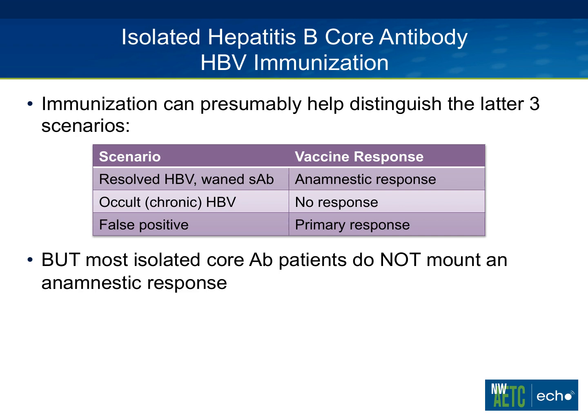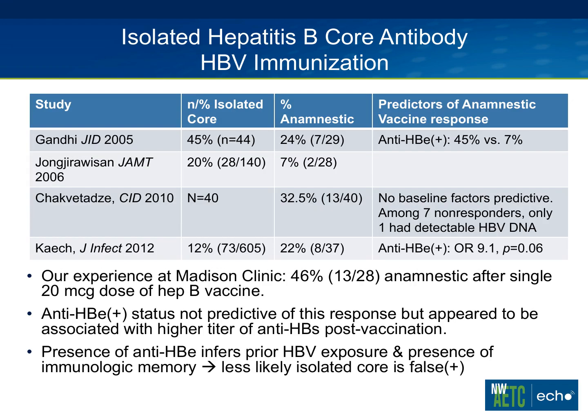In contrast, someone with chronic persistent infection who has lost their surface antigen is not really going to respond to hepatitis B vaccination, because they're incapable of mounting a robust response. A false positive will look like someone who has never seen the virus before — so they'll have a primary response to the hepatitis B vaccine series. The problem is that in the real world, hepatitis B immunization is not cleanly able to distinguish these scenarios, and many people with isolated core antibody don't mount an anamnestic response.